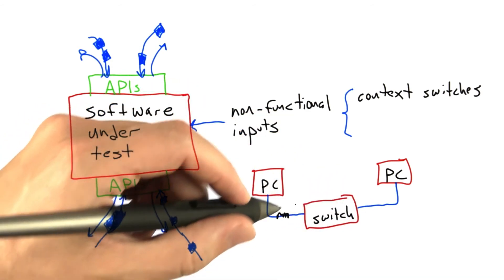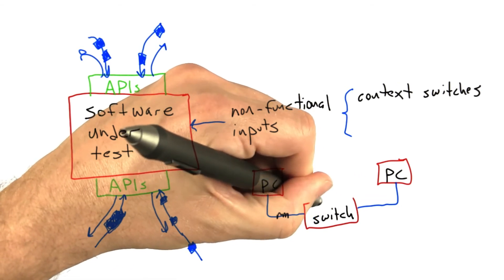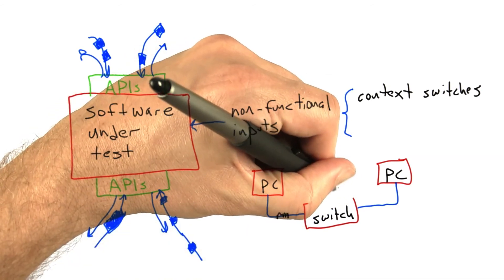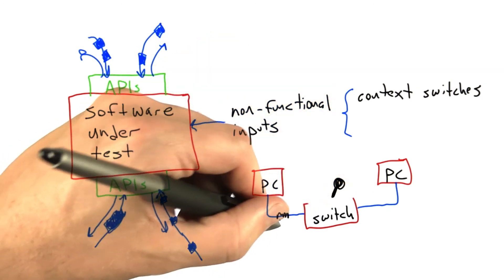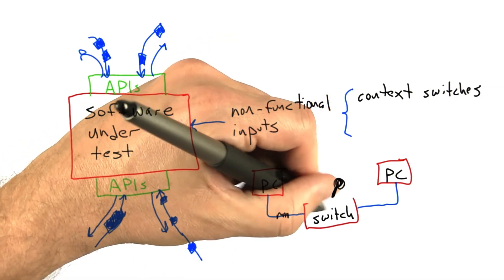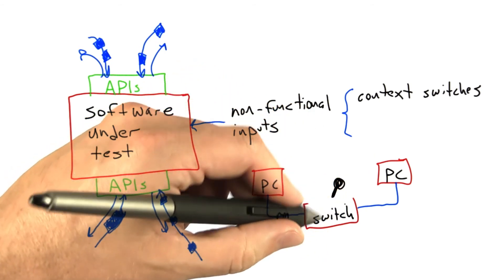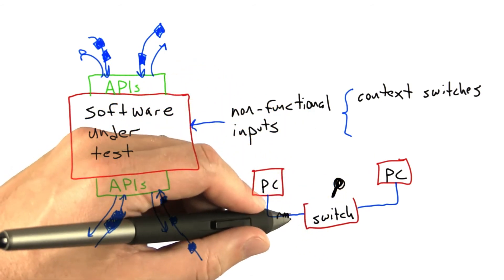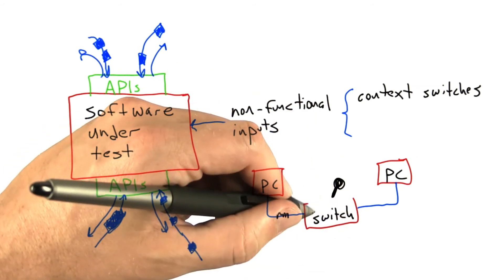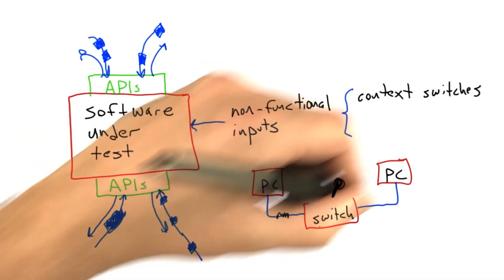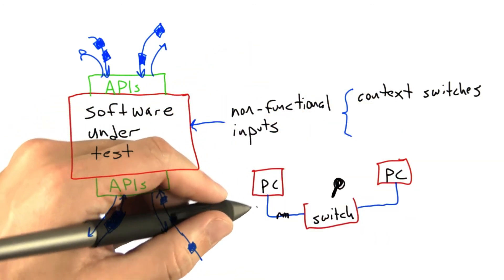What we often ended up doing is we would open up a switch, exposing all of the electrical contacts inside. Then we would take a key, a metal key, and run it across the contacts that were exposed from some of the chips inside the switch. This would introduce a massive number of very short-lived short circuits inside the switch, causing a huge number of bit errors that the software running on the PCs had to cope with.